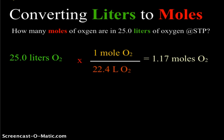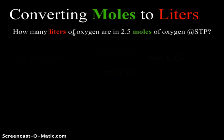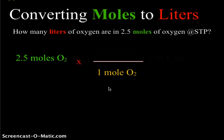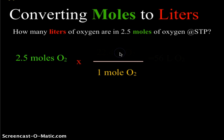Now let's look at the reverse process and convert moles to liters. How many liters of oxygen are in 2.5 moles of oxygen at standard temperature and pressure? Again, STP allows us to use Avogadro's constant. We begin with 2.5 moles of O₂ — diatomic — and set up our conversion factor with moles on the bottom and 22.4 liters on top.